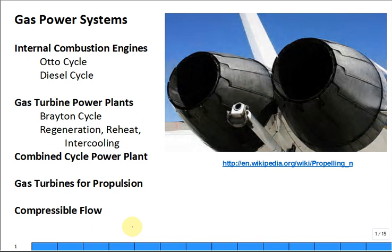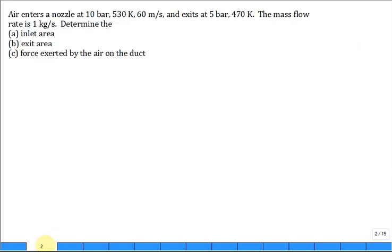We're talking about compressible flow effects and especially one-dimensional analysis of nozzles. That's the back of a jet engine nozzle shown in this illustration. This nozzle can change shape - open up a little bit and close. In aerodynamics you sometimes start below Mach 1 and then go to Mach 1, so it's advantageous to change the shape of the nozzle.